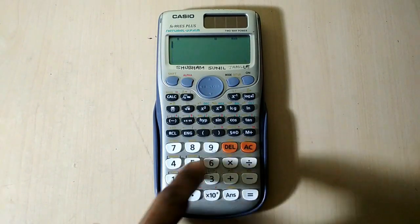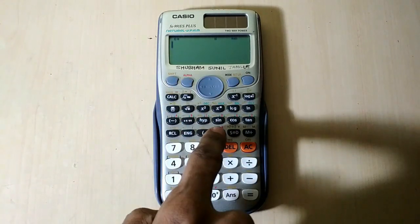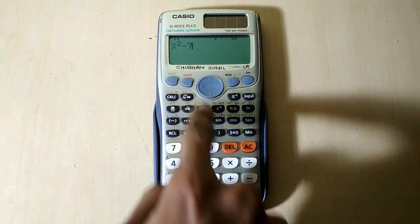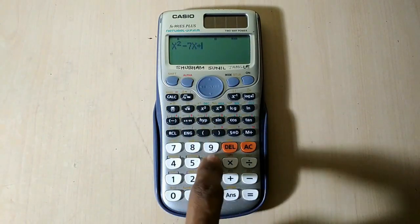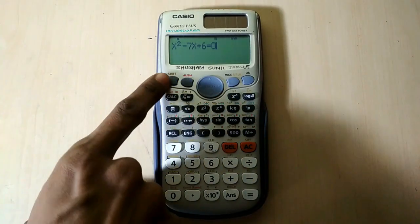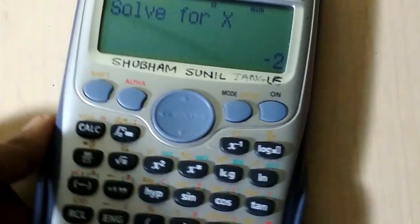Now, what happens when I type another equation? I'll type another equation and use the same shift solve function. You can see minus 2 is shown, which is our previous answer.